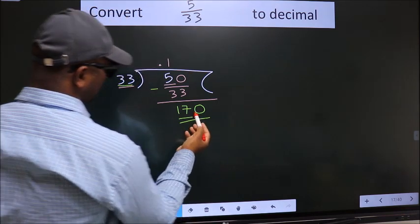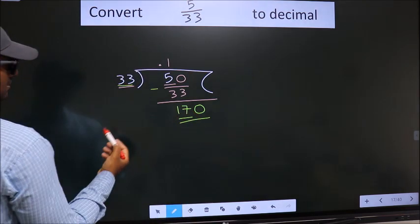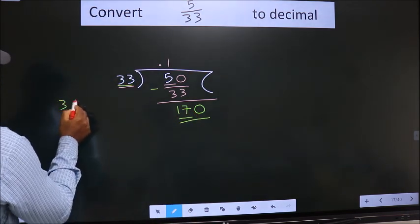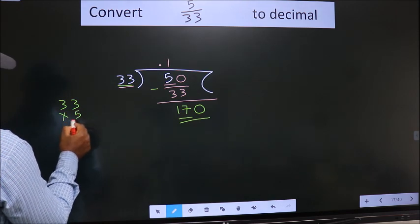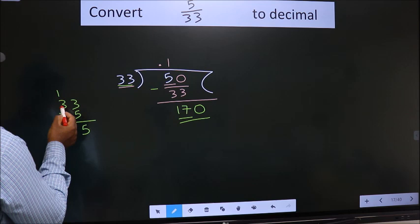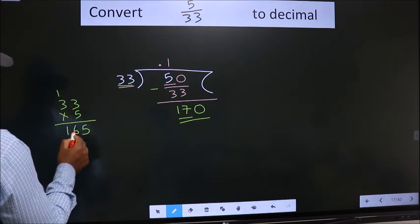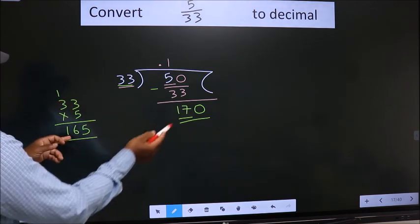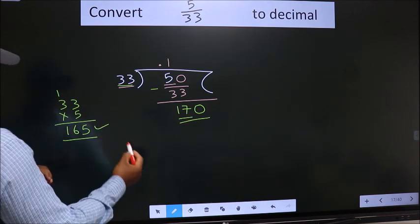A number close to 170 in the 33 table is—I check with 5: 5 times 3 is 15, 5 times 1, 5 times 3 is 15 plus 1 is 16. 165 is close to 170. So we take this.